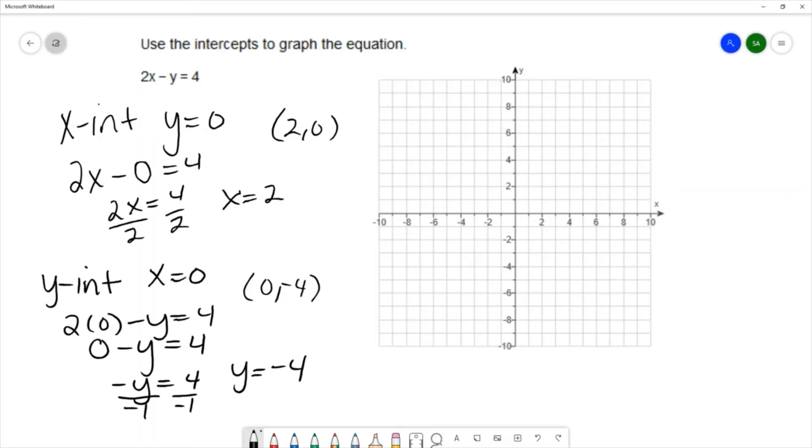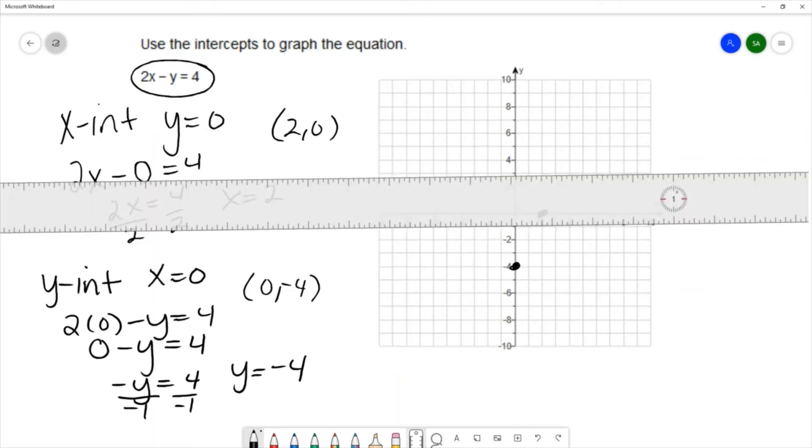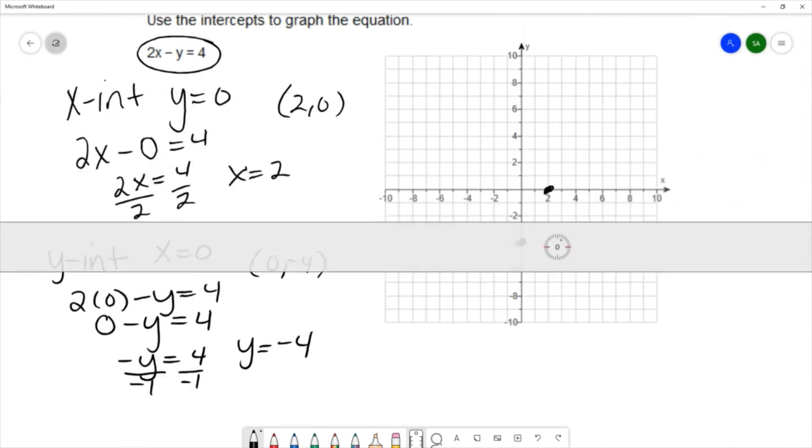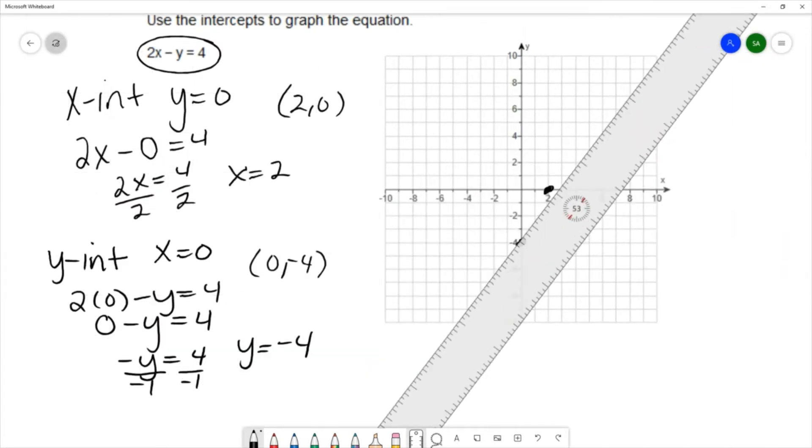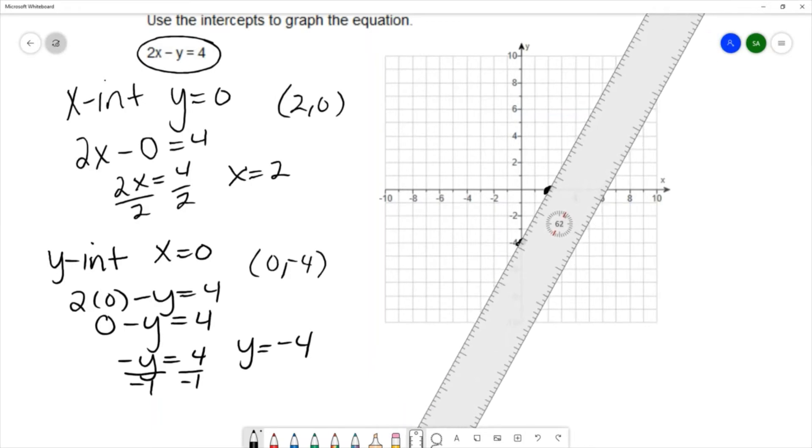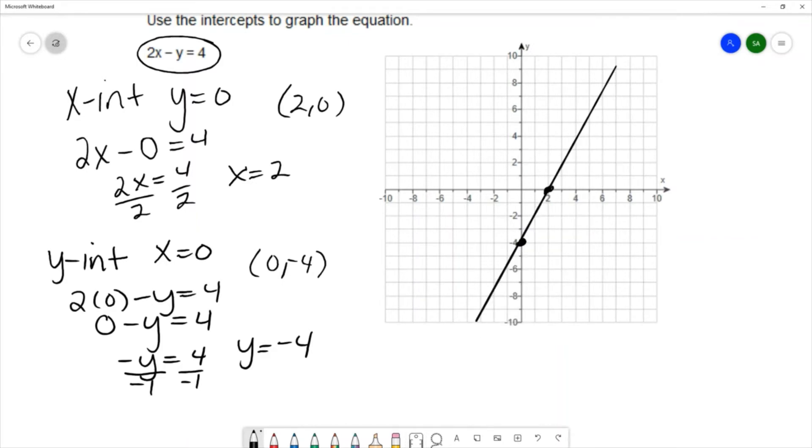Now because this is a linear equation, I'm able to graph the equation by plotting these two intercepts and connecting the points. I can plot the y-intercept, plot the x-intercept, and I'll use my ruler to draw a straight line between these two points. So this gives me a graph of 2x minus y equals 4.